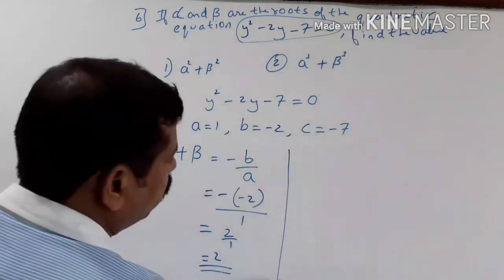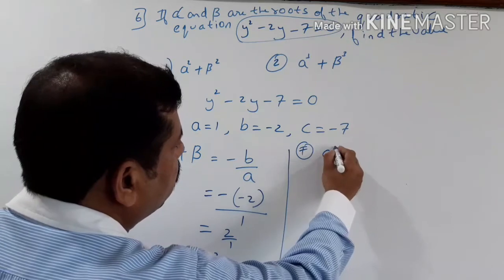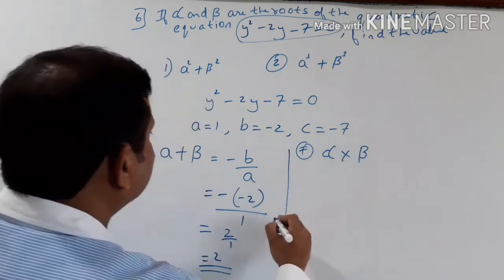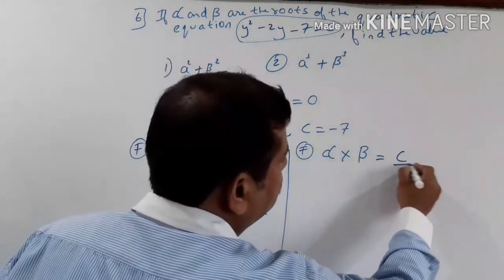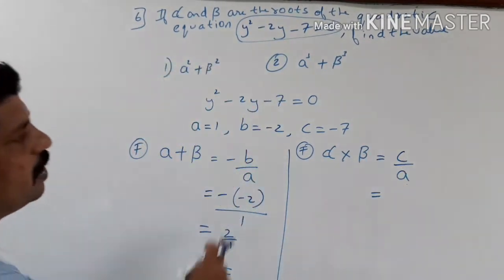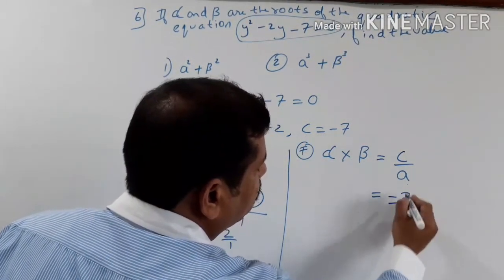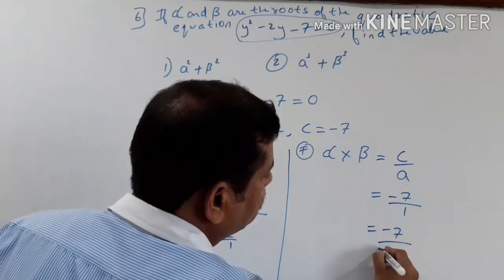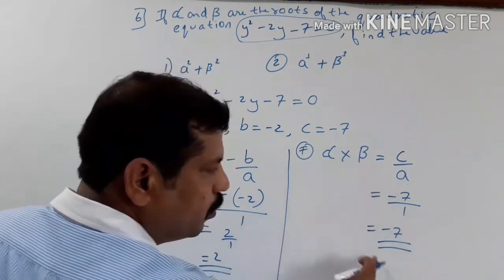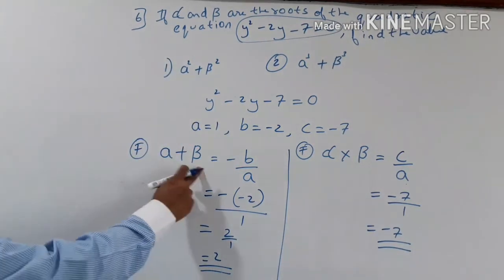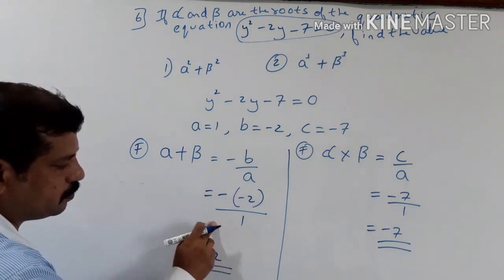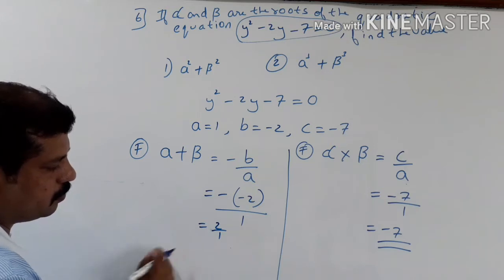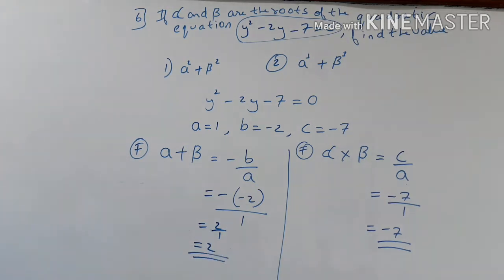The other formula: alpha into beta equals c upon a. C is minus 7, A is 1. So alpha into beta equals minus 7. Therefore alpha plus beta equals 2 and alpha into beta equals minus 7.